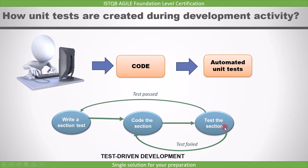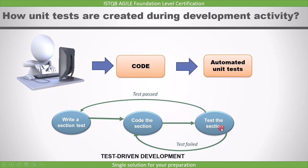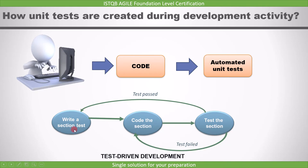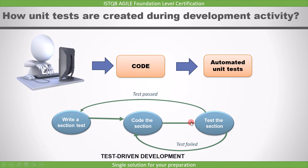If the test fails, we go back to the code implementation stage, correct the code, and then execute the test again. This process is repeated until the test passes. Once the test passes, we create a test case for the next user story. This approach is called a test-driven approach because we first write the test case and then implement the code. This is how test-driven development works.